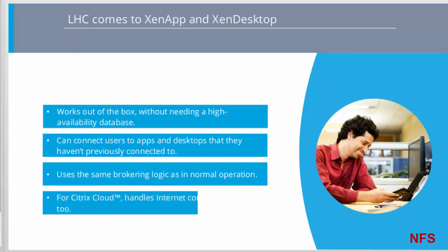In a Citrix Cloud deployment, LHC can handle cloud-based delivery controller outages, and that can happen in a number of different ways, not just due to an internet connection outage. So any disruption to the cloud-based delivery controller will mean a switch to the LHC local solution that doesn't depend on the cloud control plane.